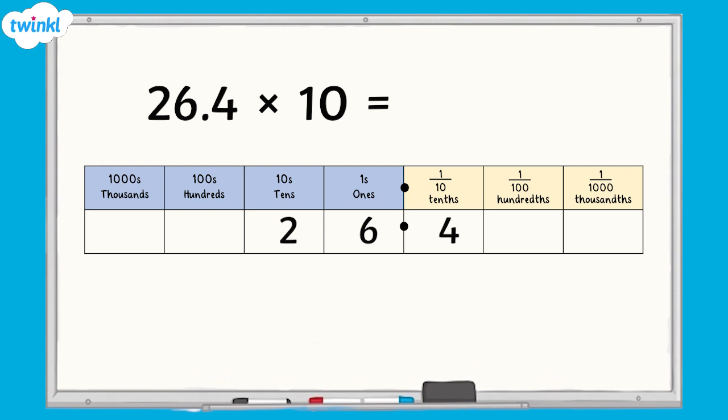When we multiply a number by 10, we move each digit one place value column to the left. To multiply 26.4 by 10, we move each digit one place value column to the left. The 2 moves from the tens to the hundreds, the 6 moves from the ones to the tens, and the 4 moves from the tenths to the ones. So 26.4 multiplied by 10 is 264.